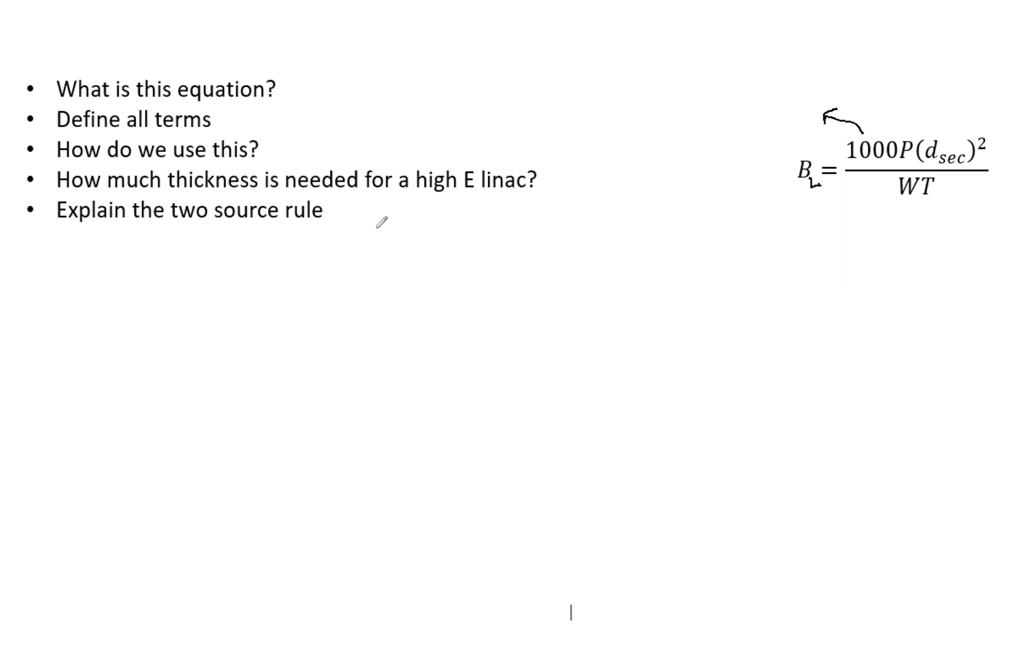So now how do we use this? Essentially, what we're going to do is we're going to calculate the transmission factor for leakage. Then we're going to calculate the transmission factor for the patient scatter. And then you are going to combine these using the two source rule. So ultimately, this is finding the secondary barrier.